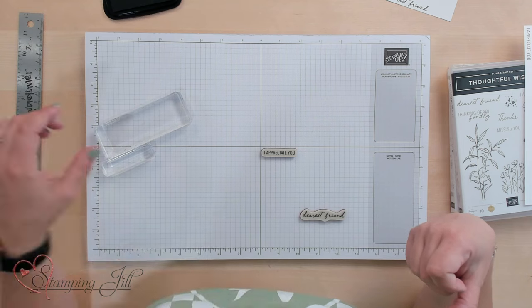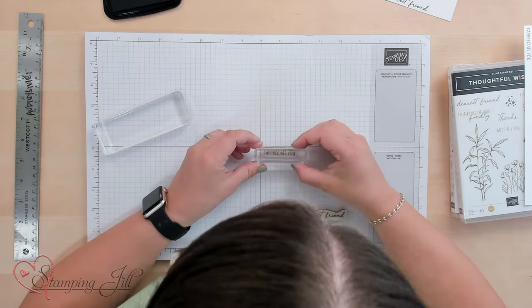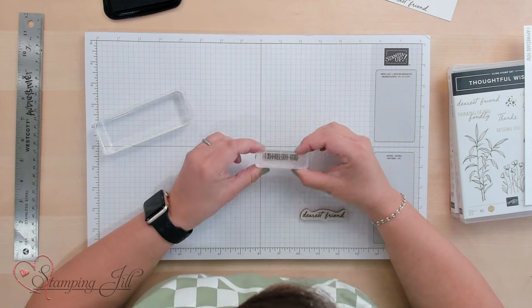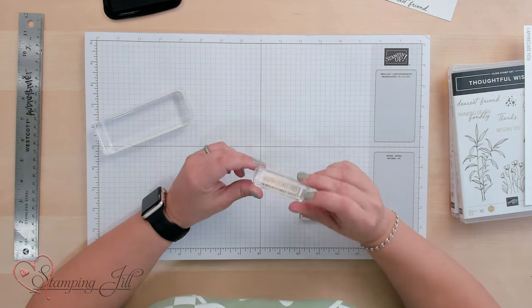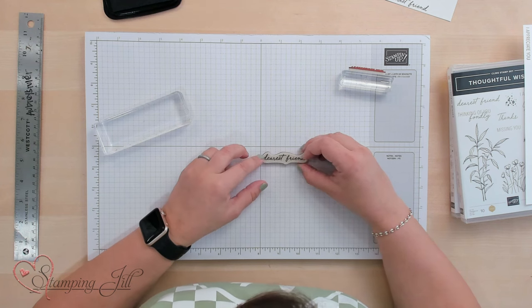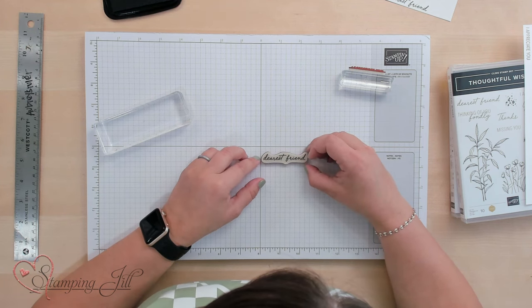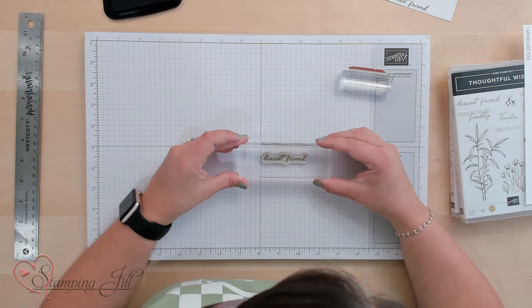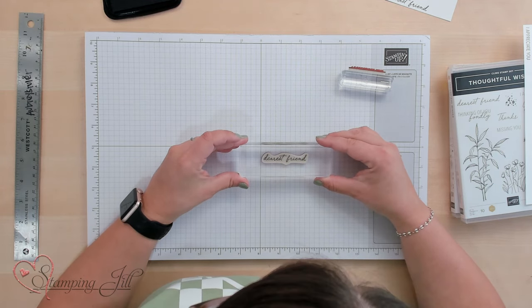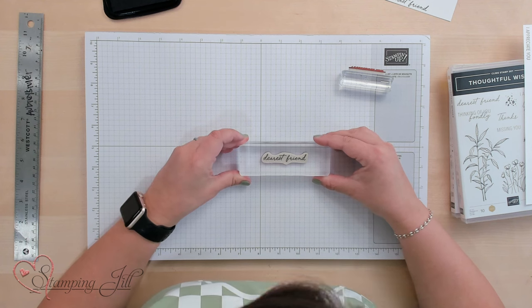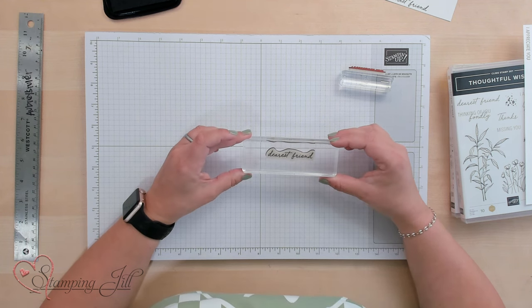And then you'll come in with your clear block and you'll make sure that your clear block is also matching up with those straight lines, and you should get a straight stamp every time. Let's try it with our cursive stamp. Again, we're going to just line that sentiment up using our grid paper and then come in making sure our clear block also is lined up in those lines. Now let me show you how to actually stamp those on some basic white paper.